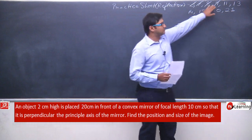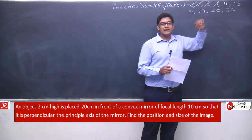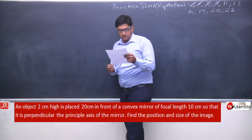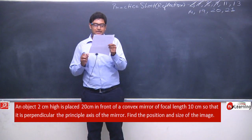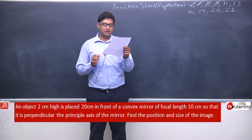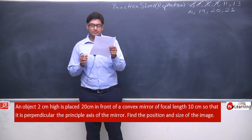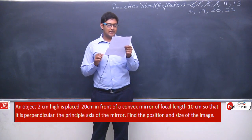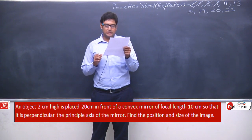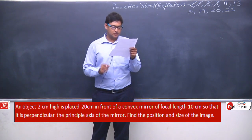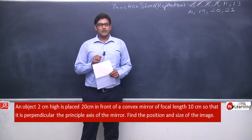We have already discussed question number 9. Now further we will discuss question number 11. Question number 11 says: an object 2 centimeter high is placed 20 centimeter in front of a convex mirror of focal length 10 centimeter, so that it is perpendicular to the principal axis of the mirror. Find the position and size of the image. So reading this question we understand that this is a numerical.